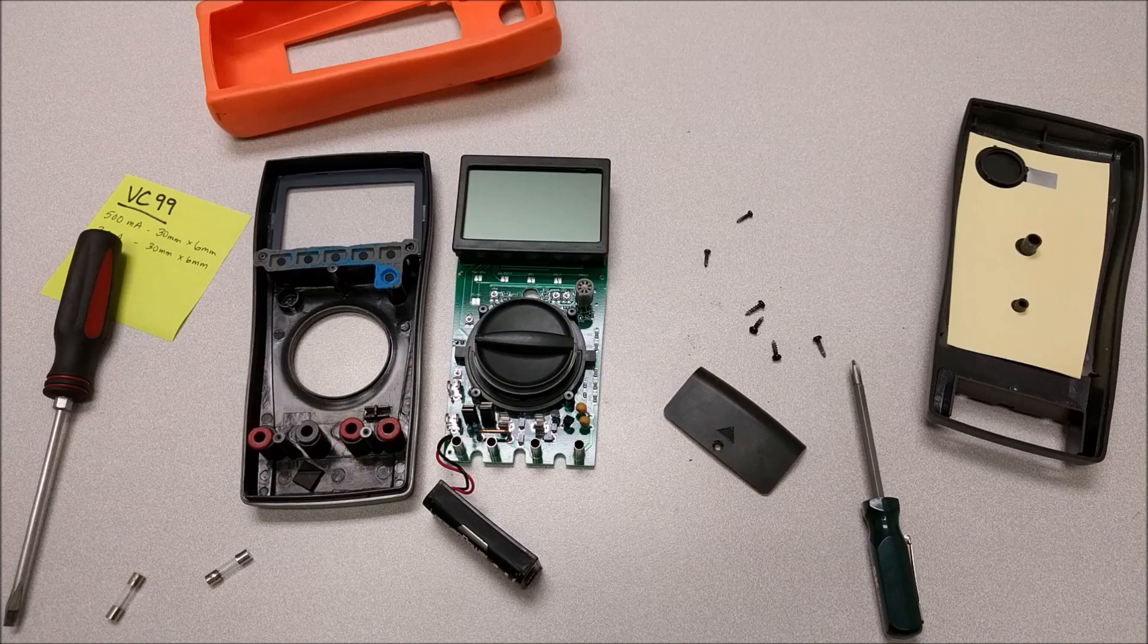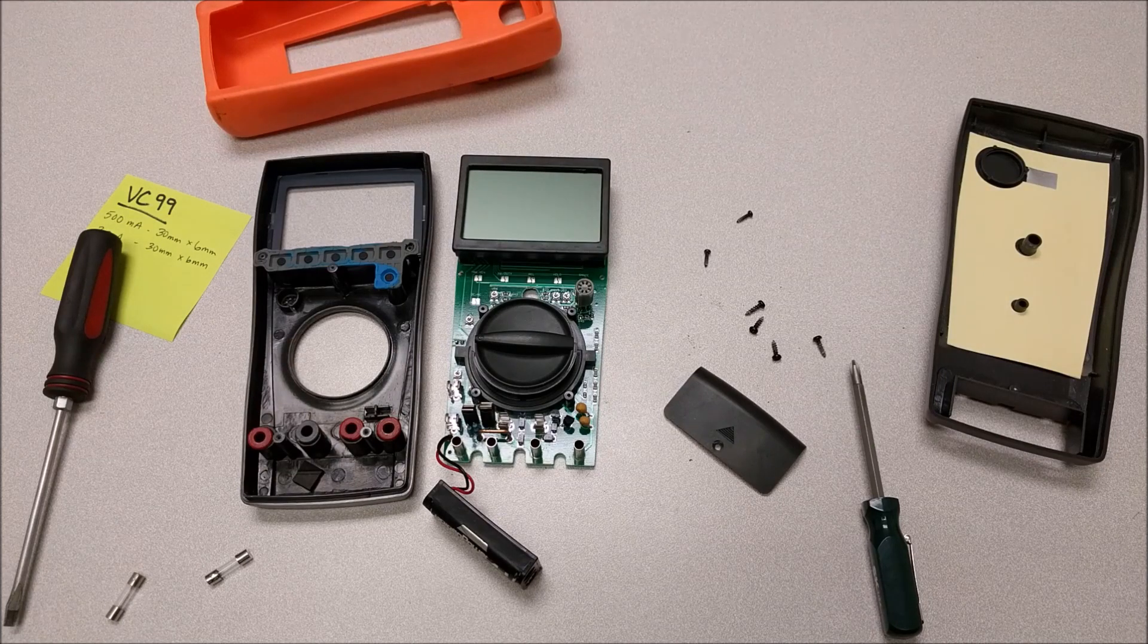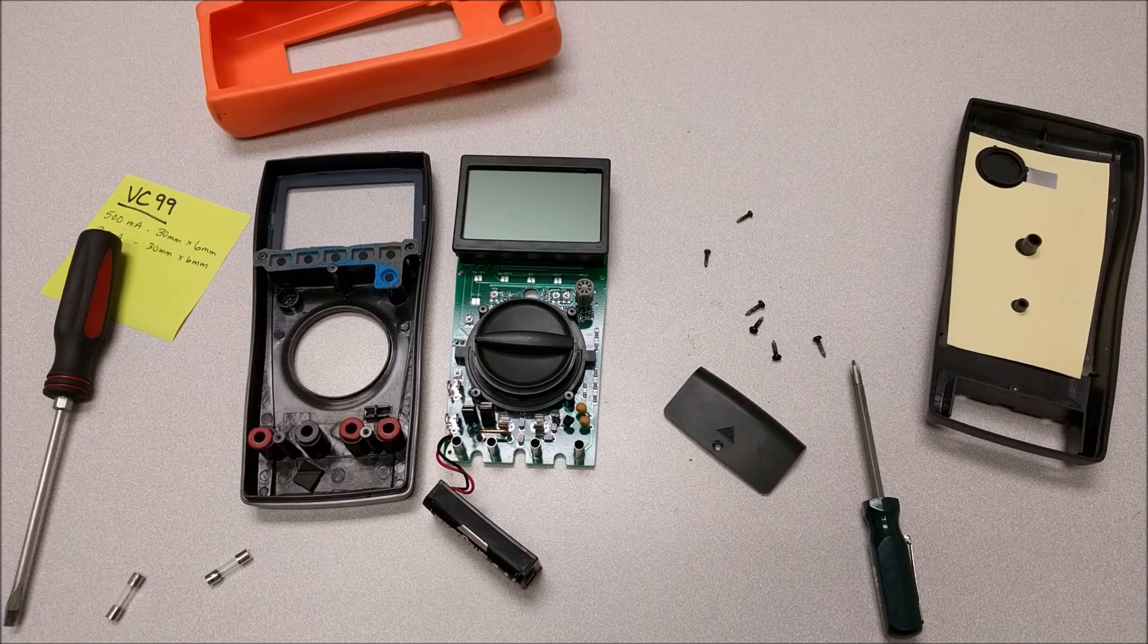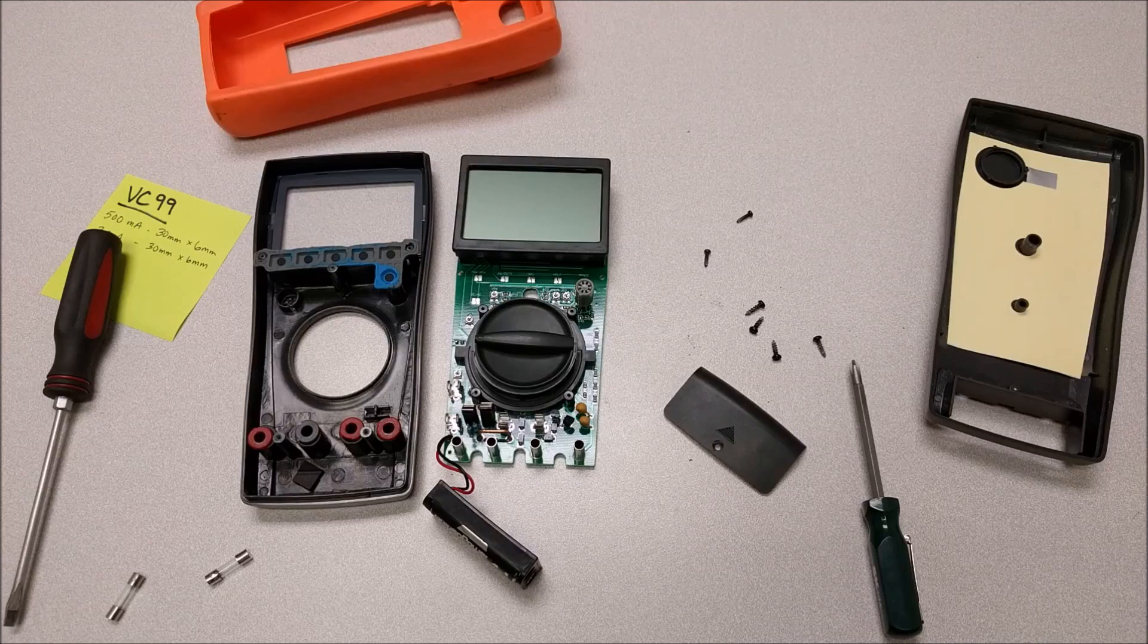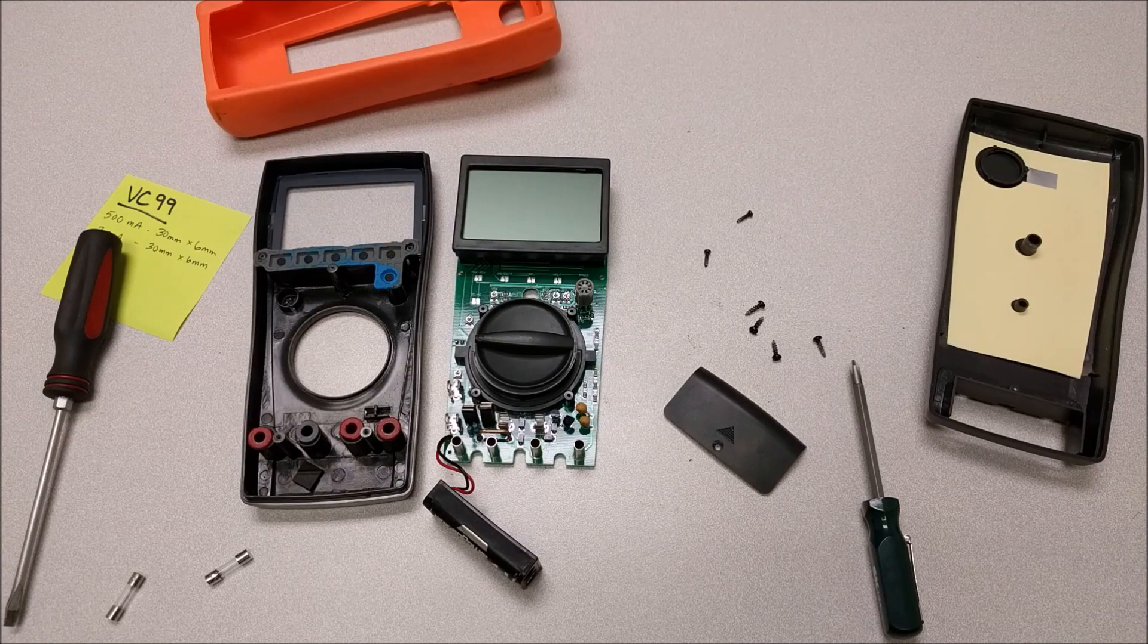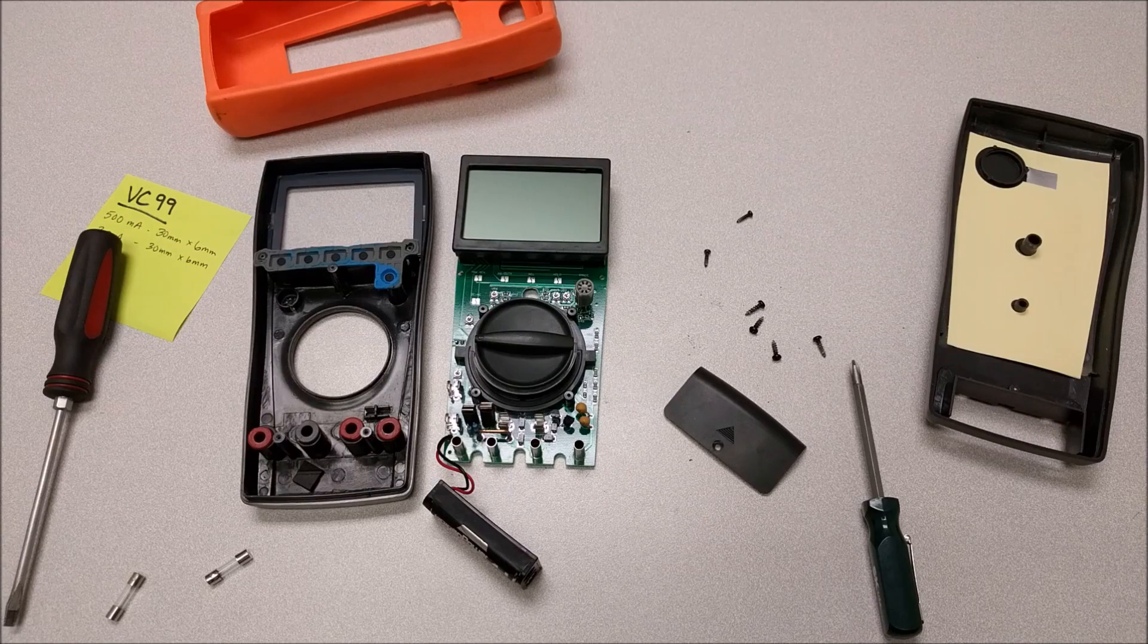And that's how you check and change the fuses in your multimeter. Remember that you can check the fuses without taking the multimeter apart. And also remember that your multimeter will continue to function in the volts and ohm settings and all the other settings when the fuses are blown. It just won't be able to measure current in the setting that has the blown fuse. Take care.